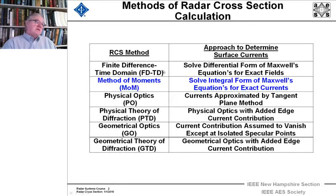Next, we're going to look at the second method, which is an exact method, and it solves the integral form of Maxwell's equations to get the exact currents. And from the currents, we'll get the scattered field, and from the scattered field, the radar cross-section. So let's start and go over that in the next few graphs.